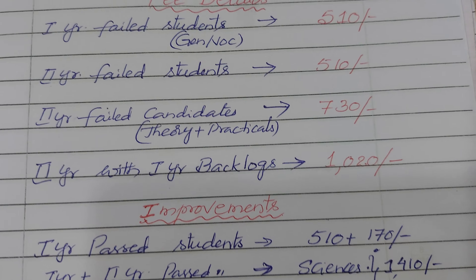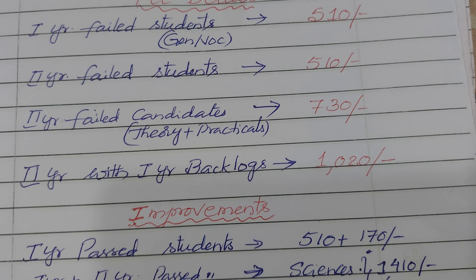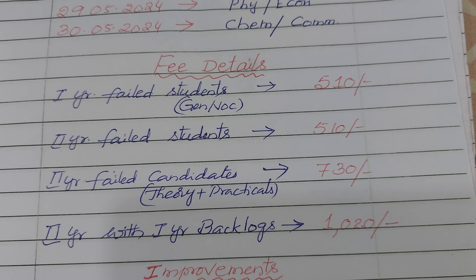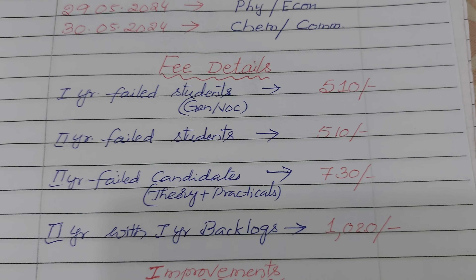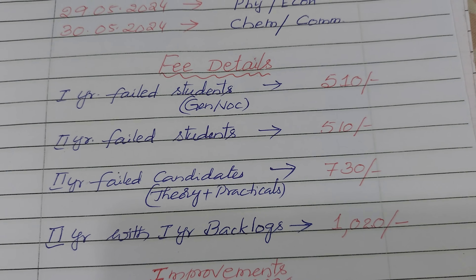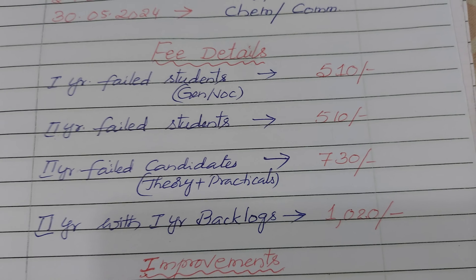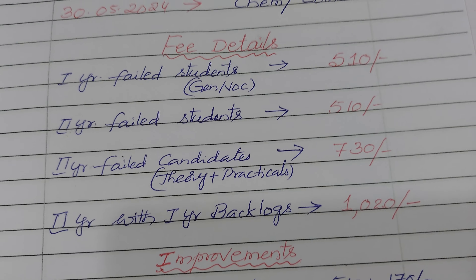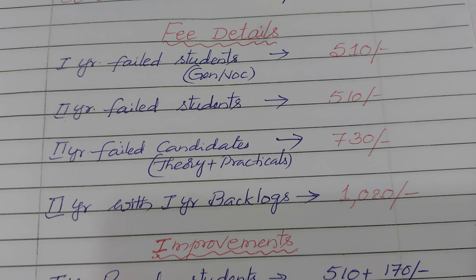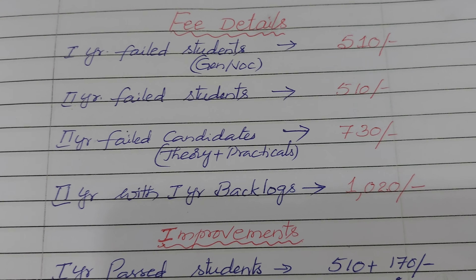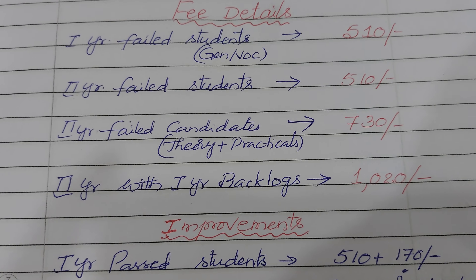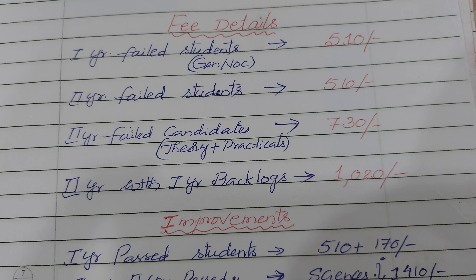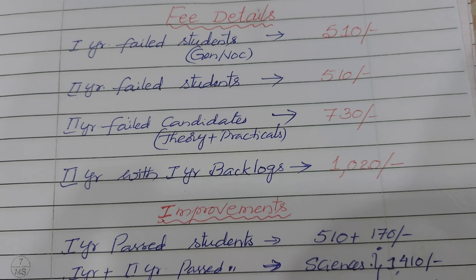May 2nd is the last date for all exam fees — supplementary fee, improvement fee, re-verification, and re-counting. You can do all of these till May 2nd. If you are not satisfied with your marks and want to see your answer script, go for re-verification, not re-counting. To apply for re-verification, contact your college office — they will guide you through the process.